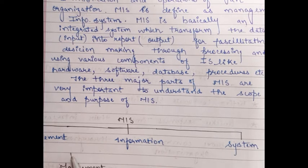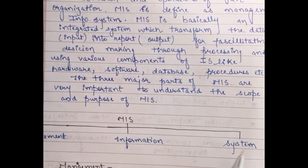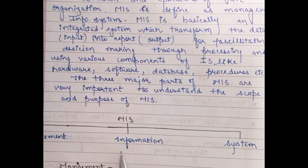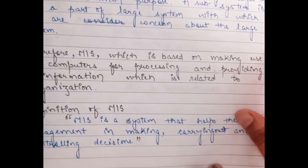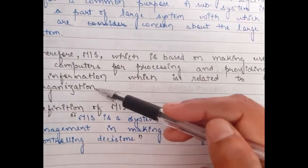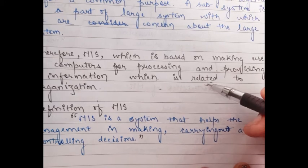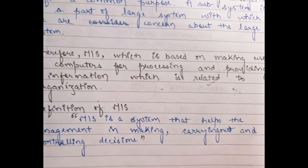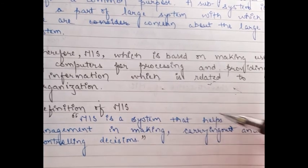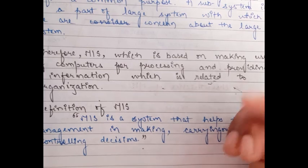So what is MIS? Management information system is used to provide information for various elements so that you can carry out the management decision-making process. MIS is based on making use of computers for processing and providing information which is related to the organization. MIS is a system that helps management in making, carrying out, and controlling decisions — helping to regulate and control what decisions are taken.